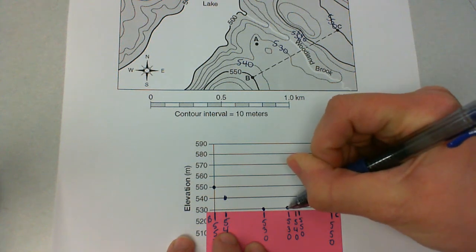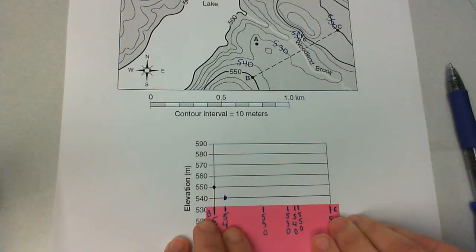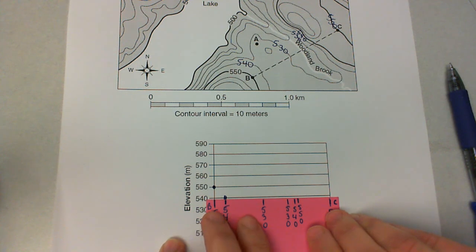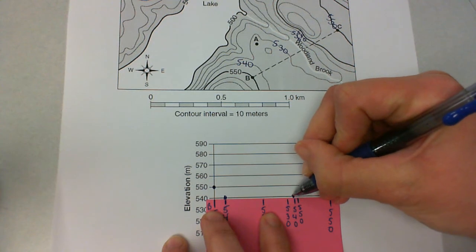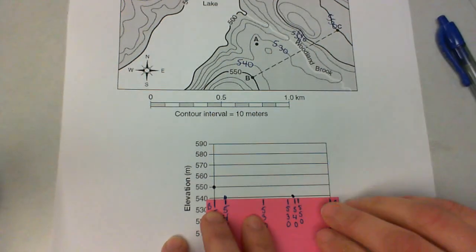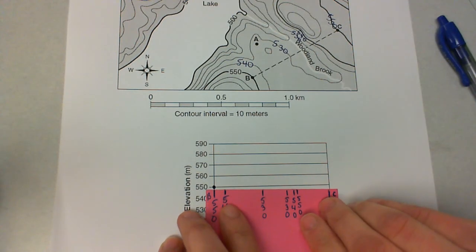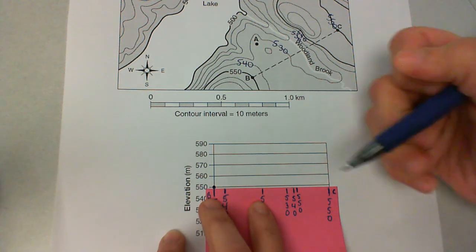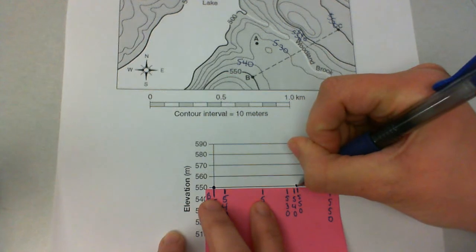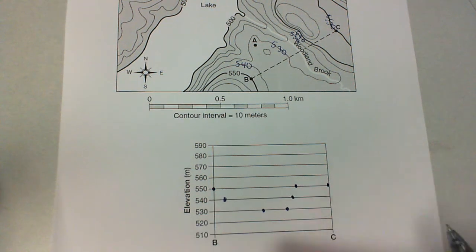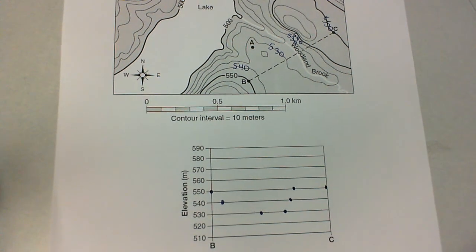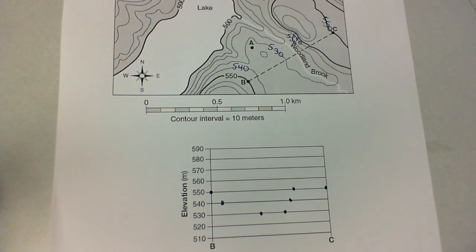Now one thing that you need to pay attention to is the size of the points that you make. You want to make sure that they're big enough that you can see them, but not so big that they're not accurate. When you draw your line in a minute, you need to be able to see those points still. So if your point is too small, it's going to get covered up by your lines. So you want to make them so that they're pretty visible. Alright, so that's what our profile looks like with the points.